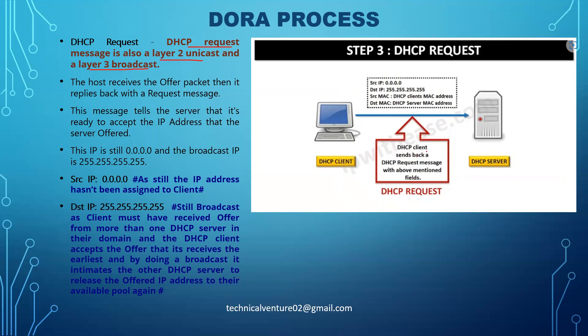The DHCP client sends back a DHCP Request message with the IP address, subnet mask, and lease duration fields. The source IP is still 0.0.0.0 because the client is only requesting the IP address — it has not yet been assigned. The destination IP is still 255.255.255.255. The destination IP remains broadcast because the client may have received offers from multiple DHCP servers.